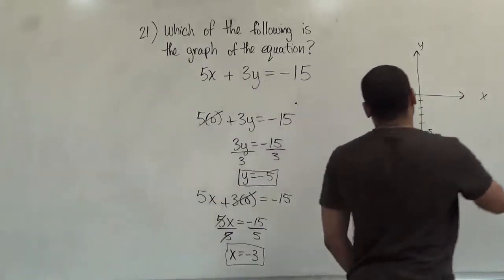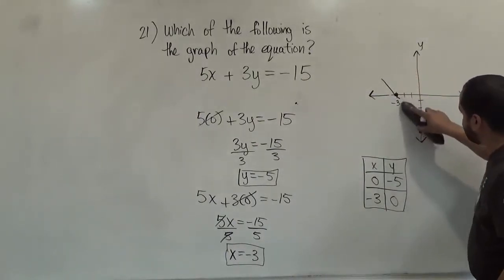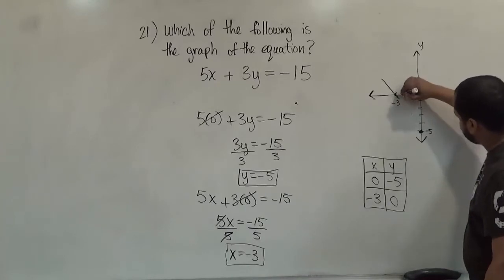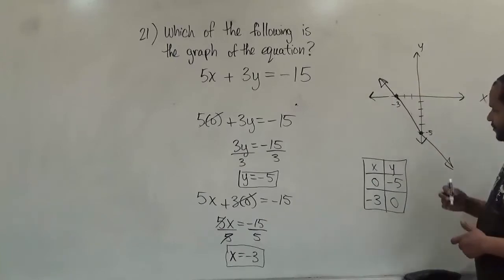Now our correct graph out of all our selections is going to have the graph of the line. That goes down this way. And there's our graph of the line.